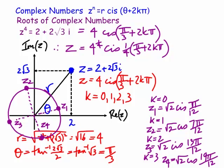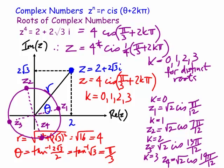The size of the circle depends on the modulus of the complex number, and the spacing depends on which root we're taking. The key trick is to add 2kπ to the argument, divide by the power using De Moivre's theorem, then substitute k = 0, 1, 2, ..., n−1 for the distinct roots. If you go beyond that, you land back on the same roots cyclically. For unique roots, always use k = 0 up to n−1.